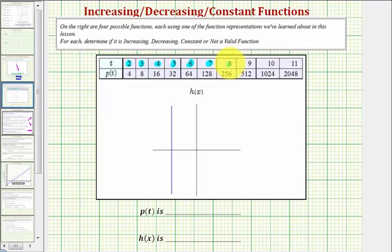Notice how all the t values are unique or not repeated, and therefore every t value or every input has only one output or one function value, and therefore we do have a function.